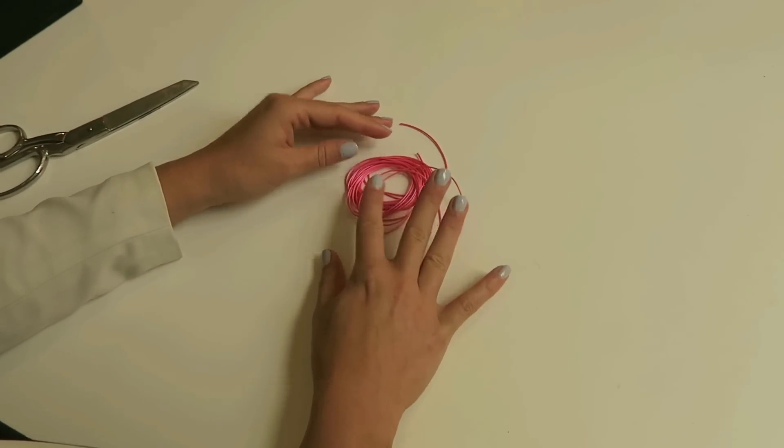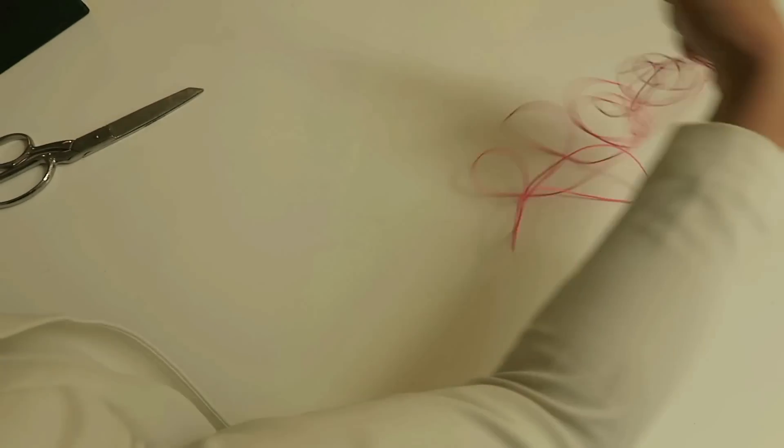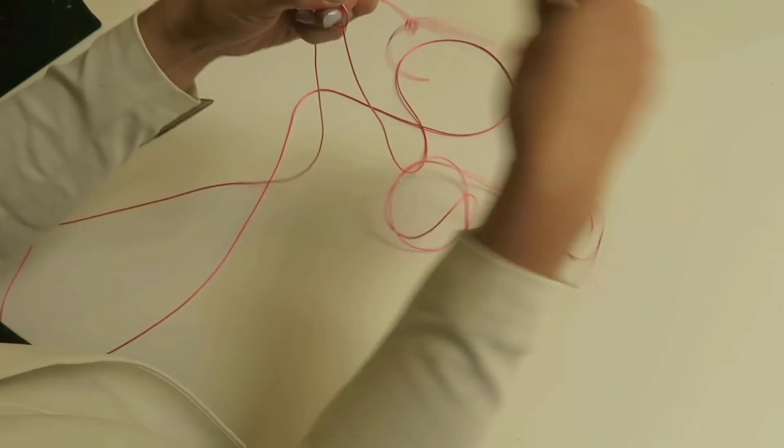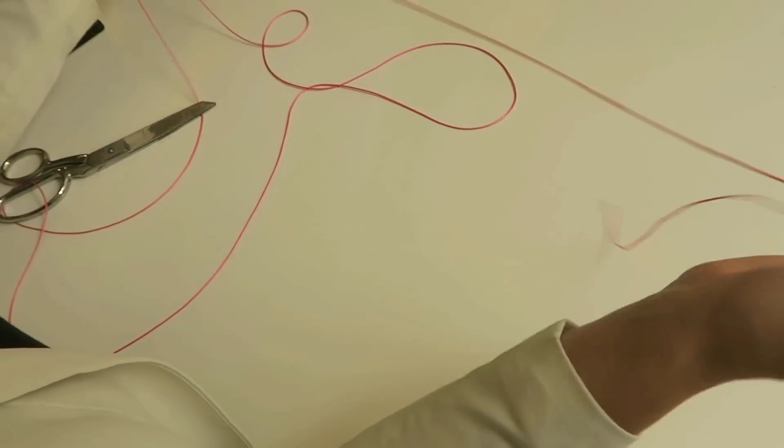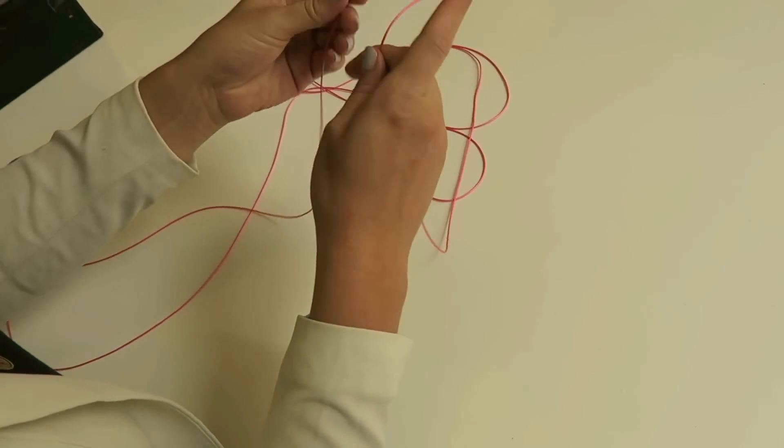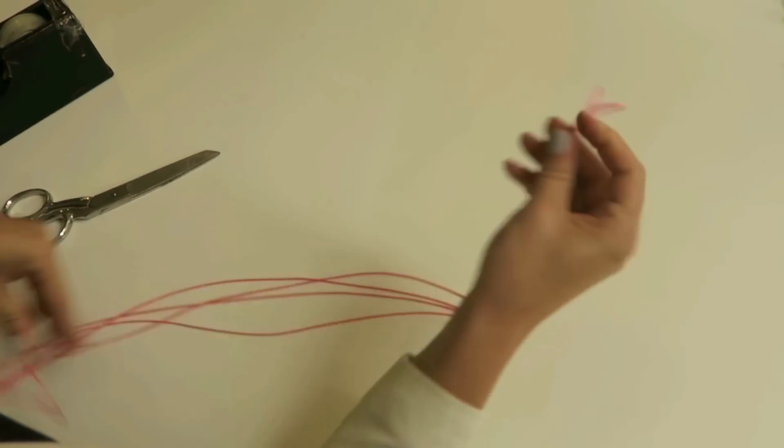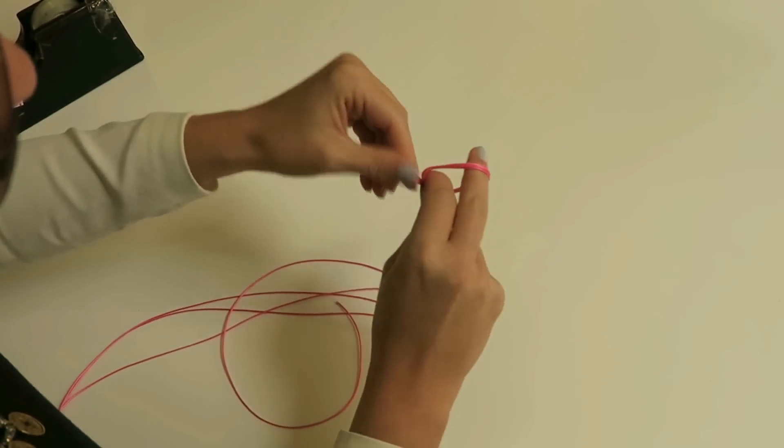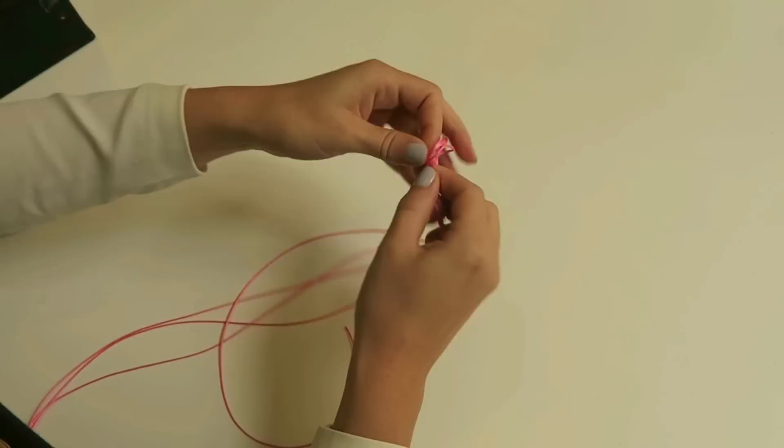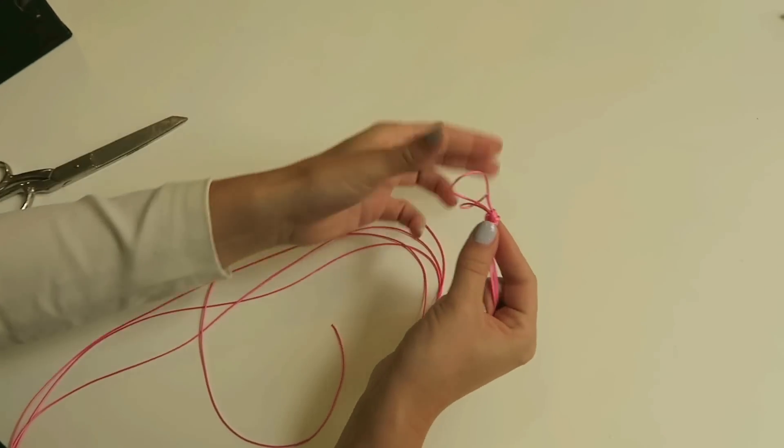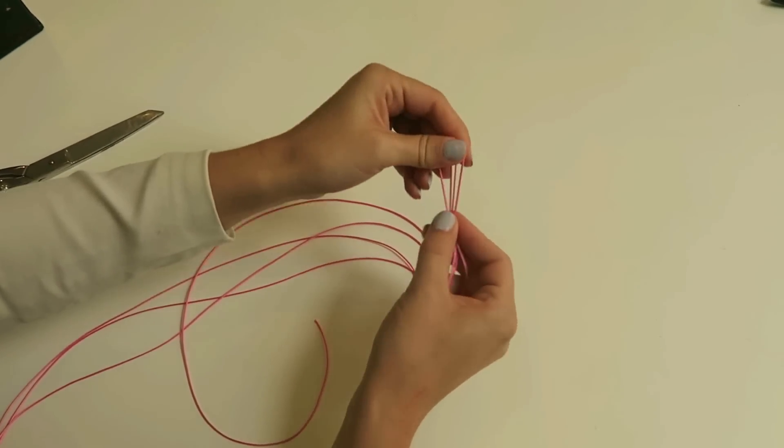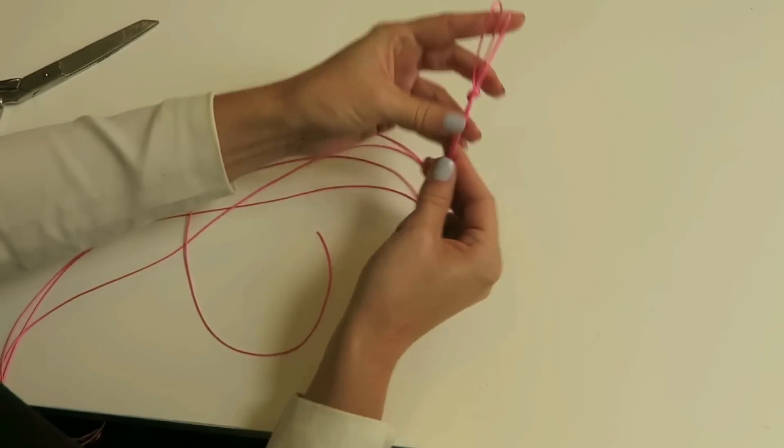Okay, so we're gonna start by making the bracelet with the waxed cord. This is 3 meters and we're gonna divide it into 4 pieces. So just do it double, and then double again, and then make a knot. Leave about 5cm in the loop so you have enough room to finish your bracelet.